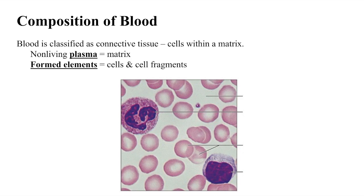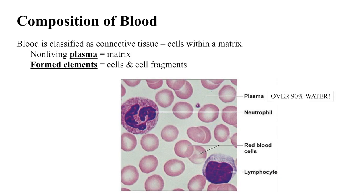Blood is classified as a type of connective tissue because it consists of cells within a matrix. The non-living fluid matrix is the plasma, and the cells and cell fragments are the formed elements. More than 100 different substances are dissolved or suspended in plasma, which is over 90% water. These include nutrients, gases, hormones, various wastes, proteins, and electrolytes. The composition of blood is dynamic, constantly changing as cells remove or add substances to the blood.